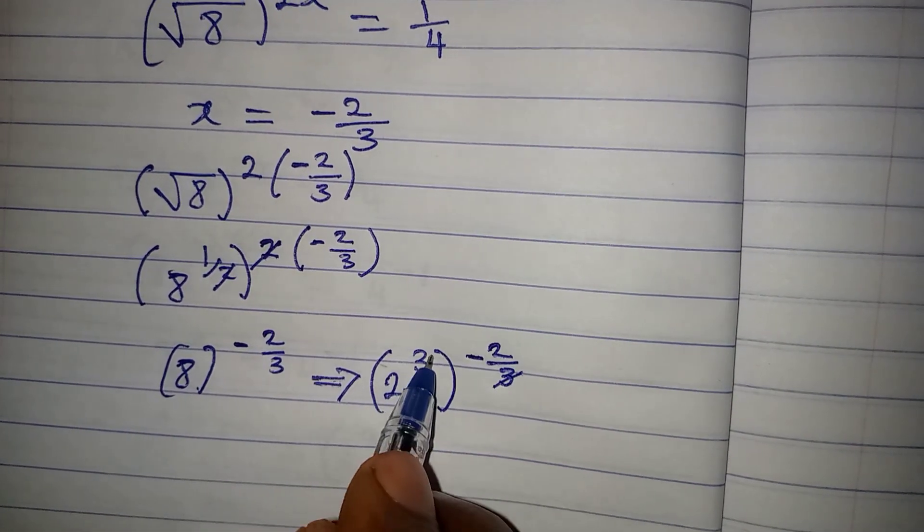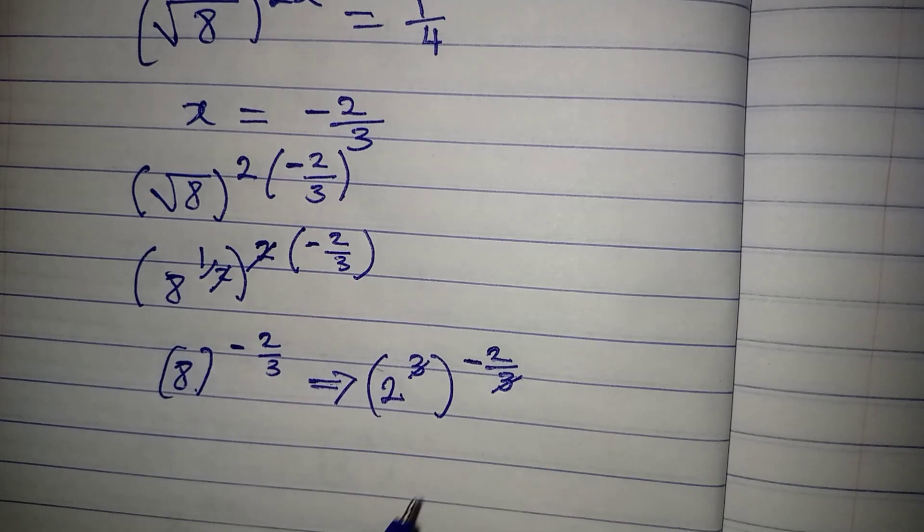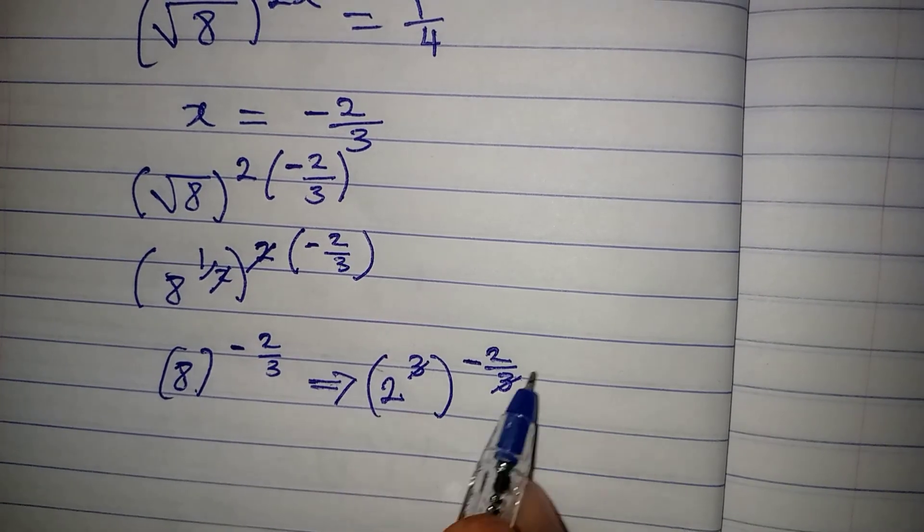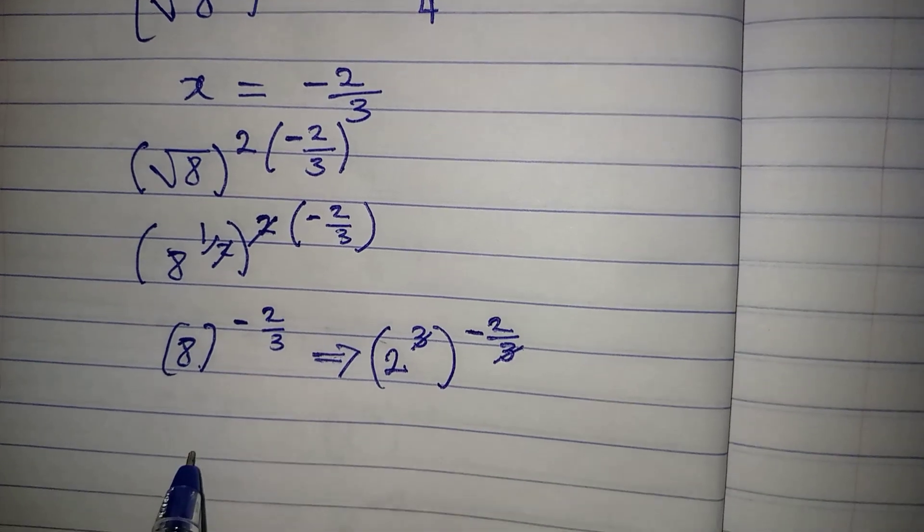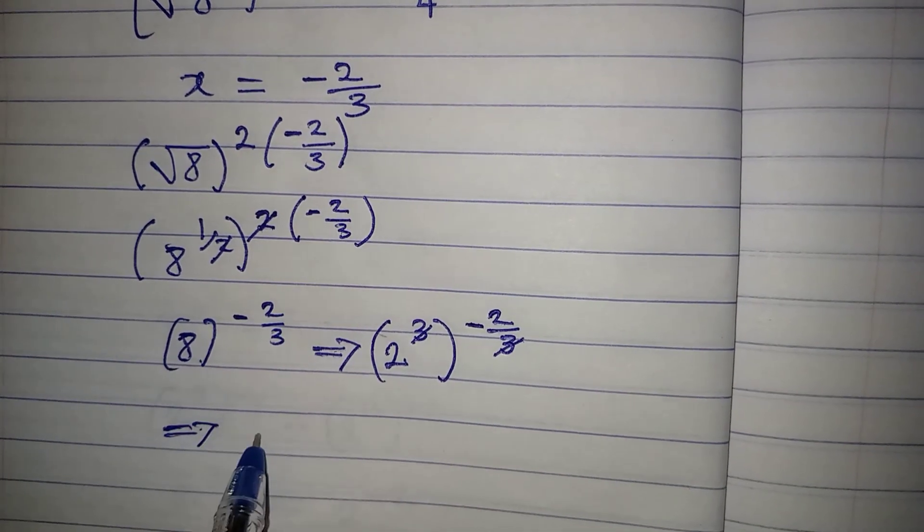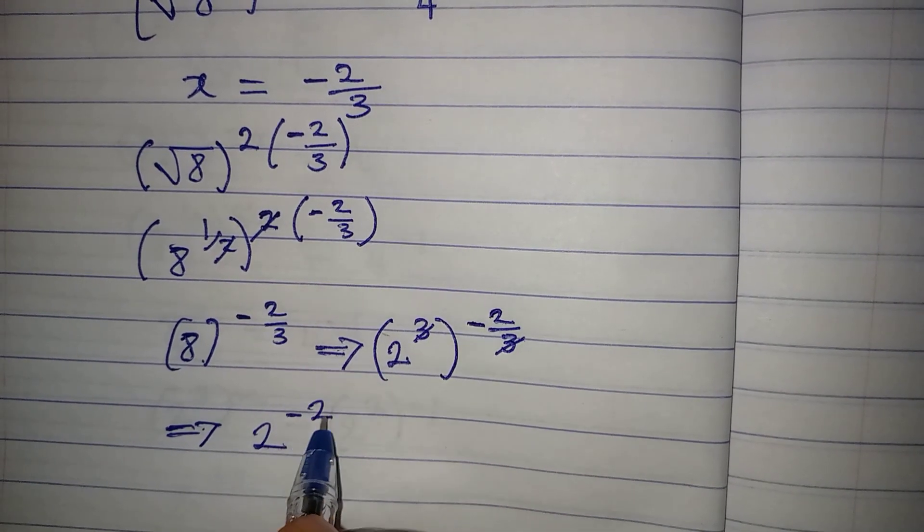Can't this cancel this? Yes, it can, because both of them are powers and we are to multiply them. So this can go with this. Now, this implies that we are having 2 to the power of negative 2.